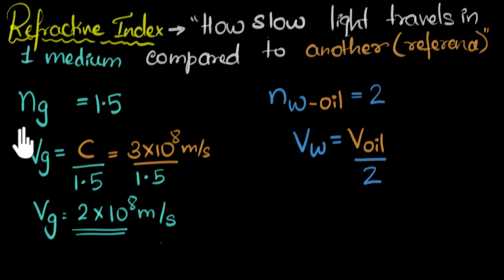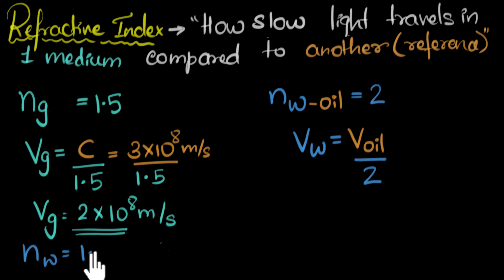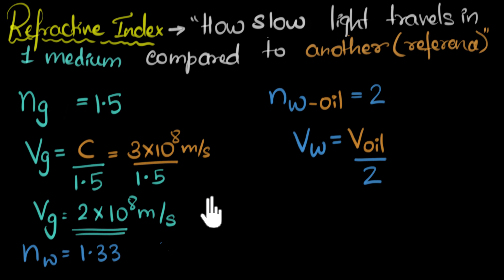So in your textbooks, you'll just see refractive index of glass is 1.5, and you may wonder what we're comparing with — it's vacuum. If it's not mentioned, it's vacuum; if it's some other medium, it will be mentioned. Just to give you another example: if it's stated that refractive index of water is 1.33 — just that much — since the second medium is not mentioned, this means refractive index of water with respect to vacuum is 1.33. That means speed of light in water is 1.33 times slower compared to the speed of light in vacuum, and using this number I can figure out what the speed of light in water is.